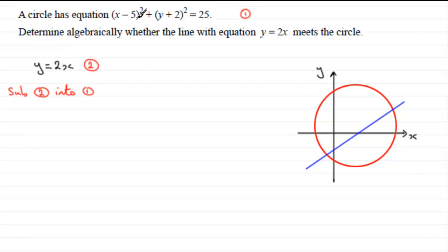So if I substitute 2 into equation 1, we've got (x - 5)² plus, instead of y here we're just going to write 2x, so we've got (2x + 2)² and that equals 25.